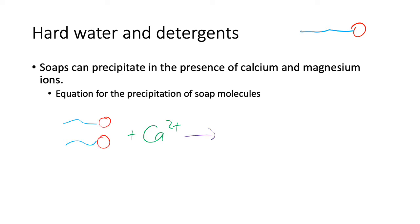You need two soap molecules because each is negatively charged. Then you get Ca with the soap formula in brackets, subscript 2, and it's a solid.